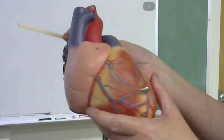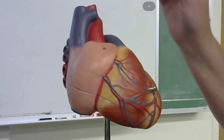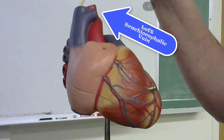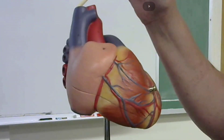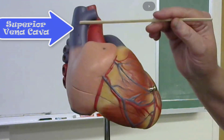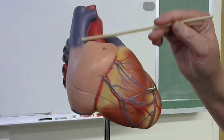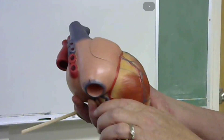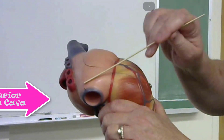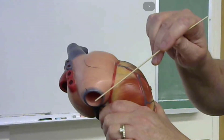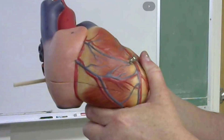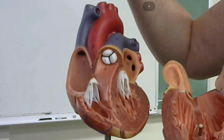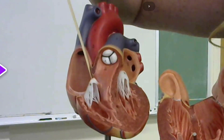Deoxygenated blood coming from the upper portions of the body travels through the right and left brachiocephalic veins. The right and left brachiocephalic veins merge together to form the superior vena cava, which drains into the right atrium. Deoxygenated blood from the lower portions of the body enters through the inferior vena cava. So both the superior and inferior vena cava drain into the right atrium.